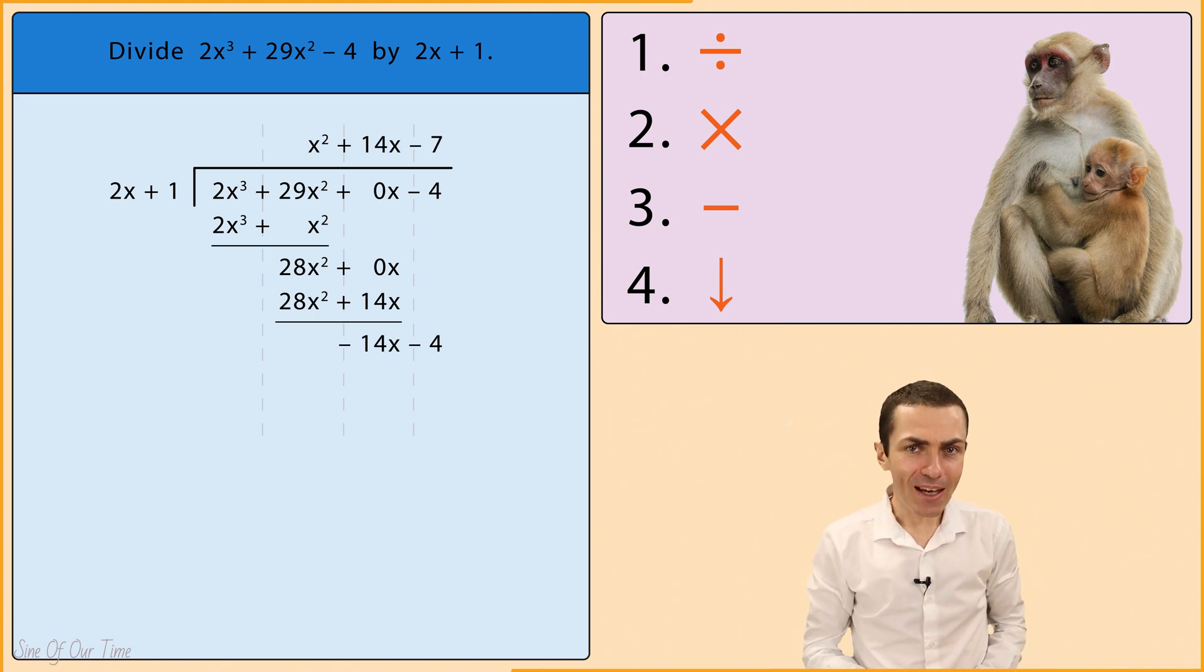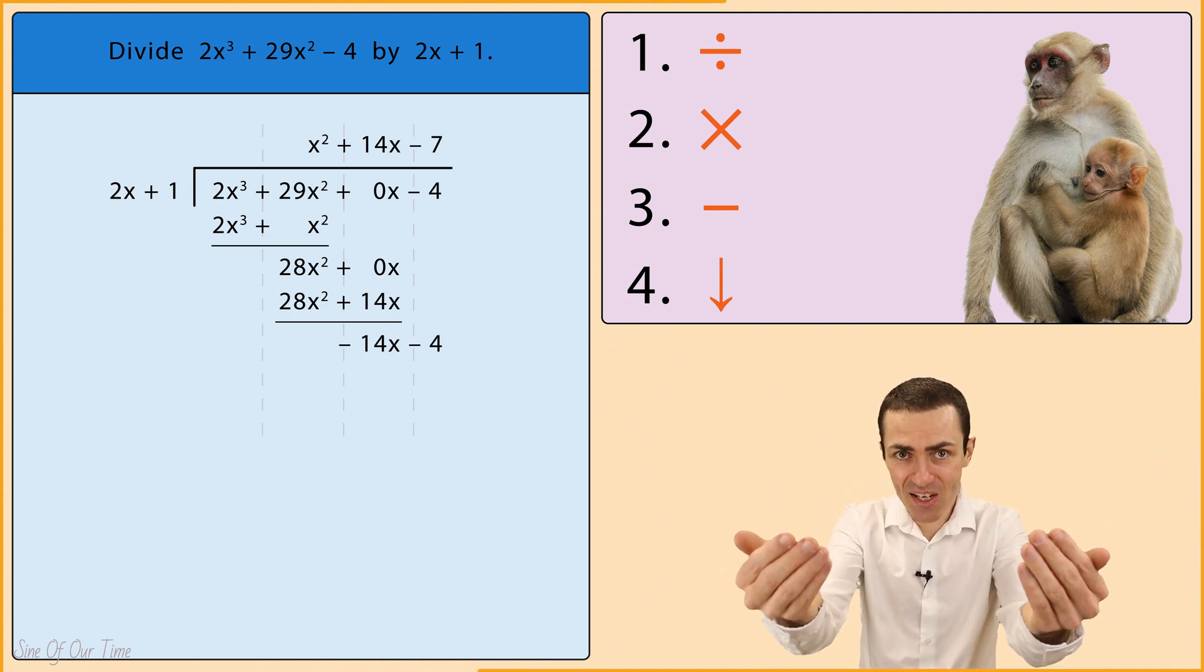Step 2: Multiply. Negative 7 multiplied by 2x plus 1 gives us negative 14x minus 7.